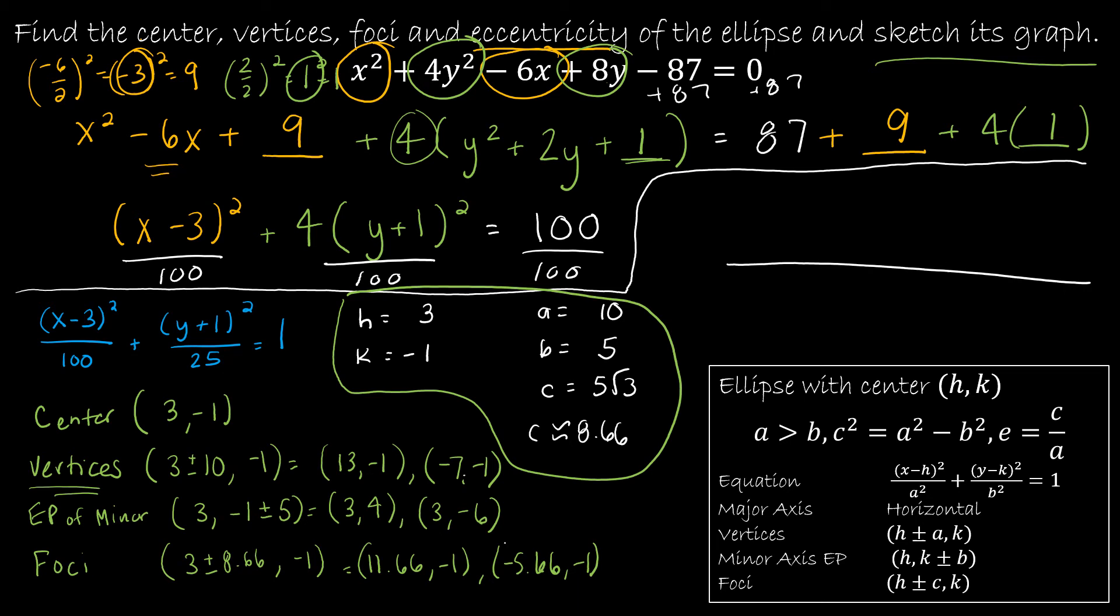So now let's take a look at what that graph would look like. And we're not going to be super precise in this. The center is at 3 negative 1, and then I've got to go to about 13. So counting up to 13.